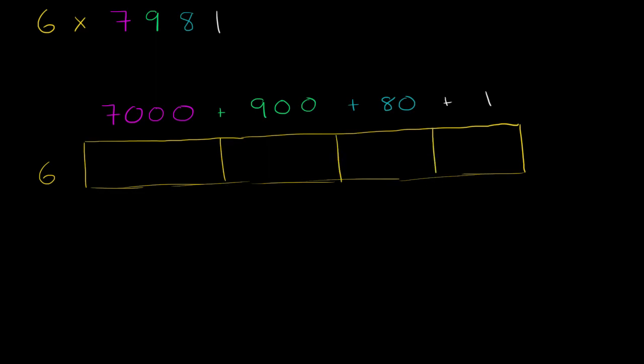And so we just need to think about what is 6 times 7,000? Well, 6 times 7 is 42. So 6 times 7,000 is 42,000. 6 times 900, once again, 6 times 9 is 54. So 6 times 900 is 5,400.